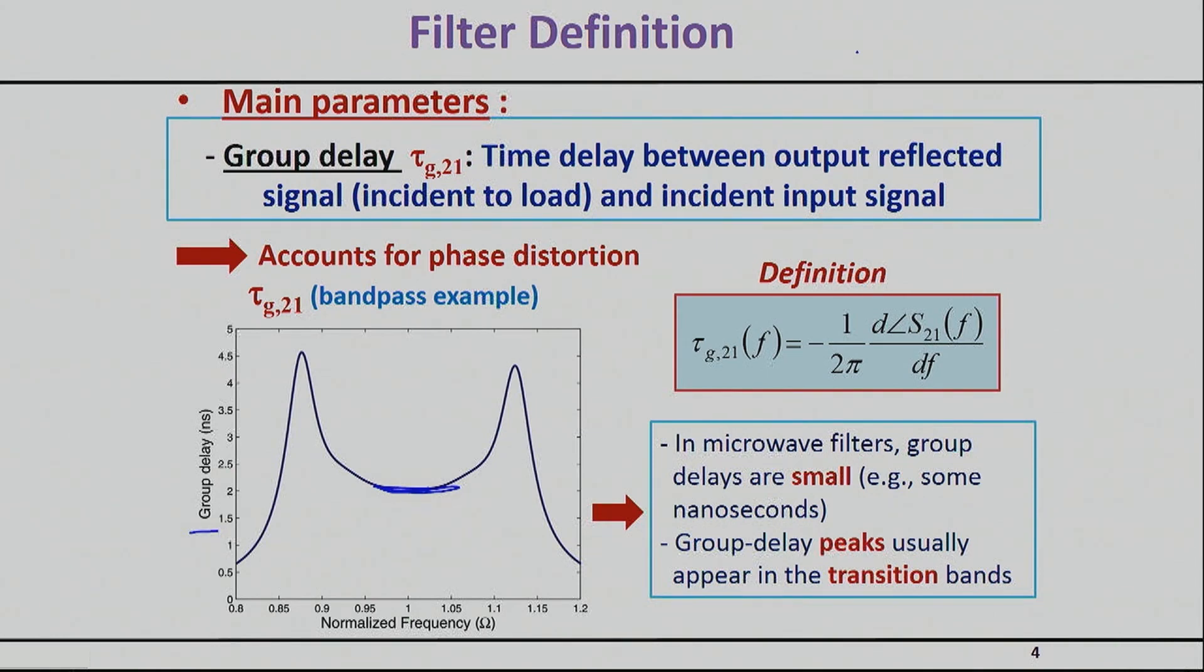But unfortunately, close to the transition bands, this could be the transition band of a bandpass filter, you will basically get those type of peaks. And it's those type of peaks that cause trouble. Now, unfortunately, the more selective the filter is, the worse those peaks become. And so usually there is a trade-off between how much you can deviate from flatness and how much selectivity you basically want to have. So it's usually those peaks in the transition bands that will dominate the group delay issue.